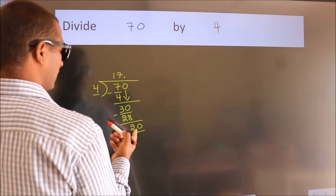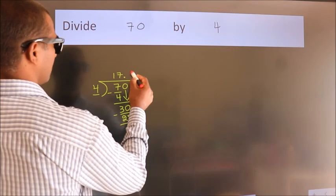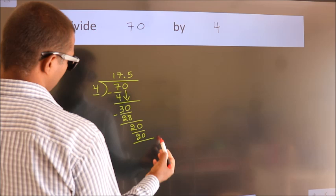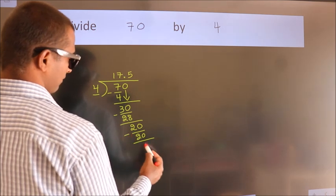When do we get 20? In 4 table. 4 fives, 20. Now, we subtract. We get 0.